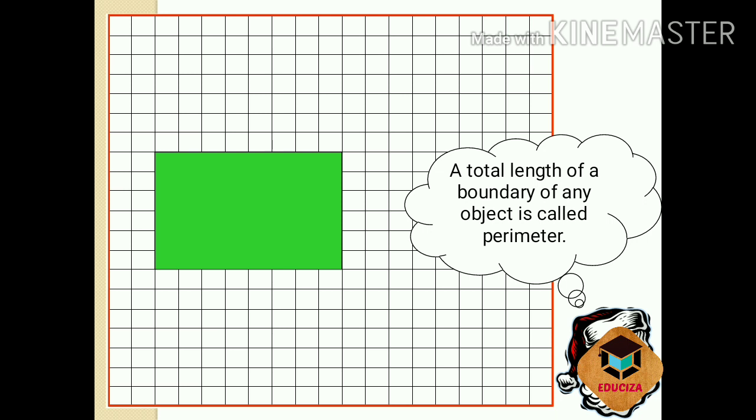Koi bhi object hoota hai, us ki her side ka total jab kiya jata hai, usay perimeter kaha jata hai. Total length of a boundary of any object is called perimeter.